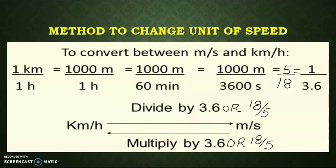Method to change the unit of speed. This is very important because sometimes we have to calculate the speed of an object in different units. To convert from meter per second to kilometer per hour: one kilometer is equal to one thousand meters, and one hour is equal to sixty minutes, and one minute is equal to sixty seconds.